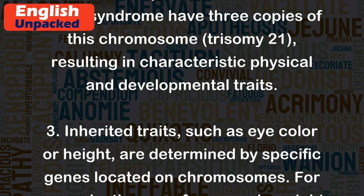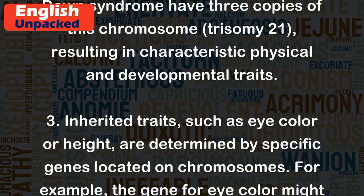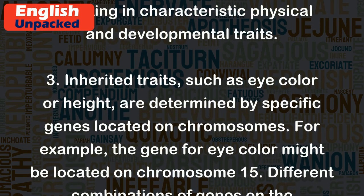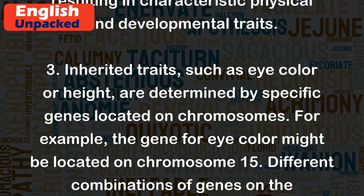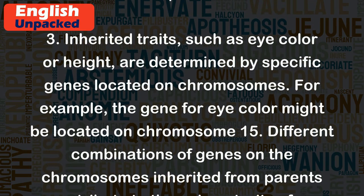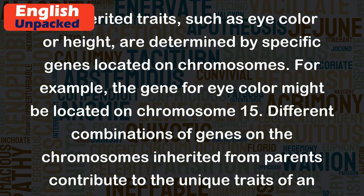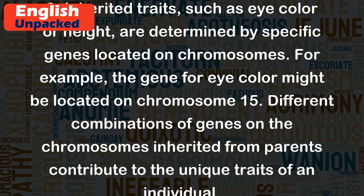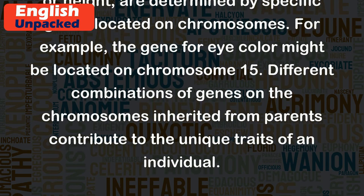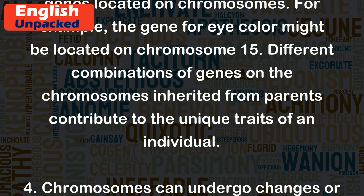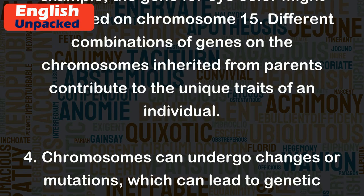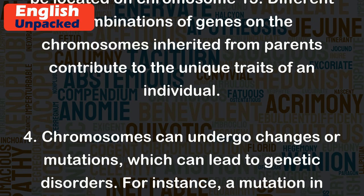Inherited traits, such as eye color or height, are determined by specific genes located on chromosomes. For example, the gene for eye color might be located on chromosome 15. Different combinations of genes on the chromosomes inherited from parents contribute to the unique traits of an individual.